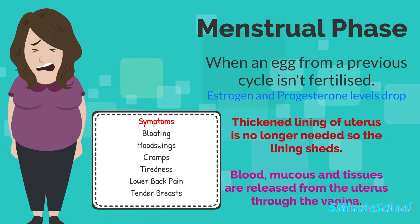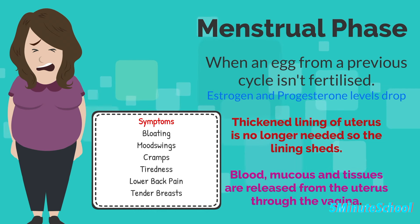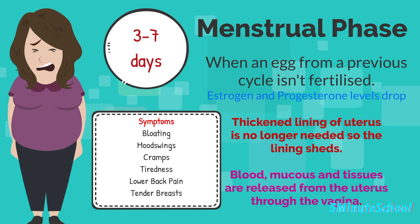In this stage you get symptoms like bloating, cramps, tiredness, lower back pain, tender breasts, and irritability. The menstrual phase of the cycle usually lasts around three to seven days.